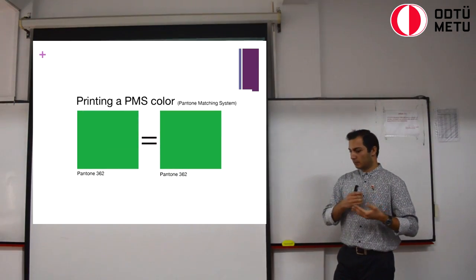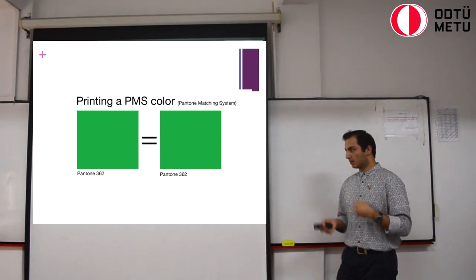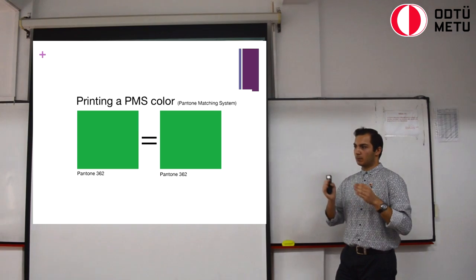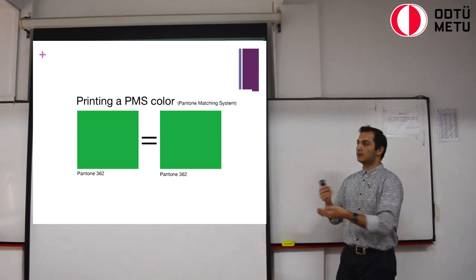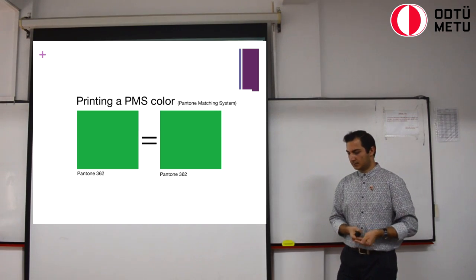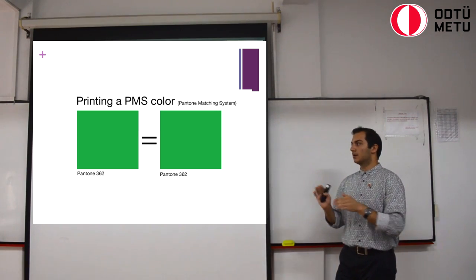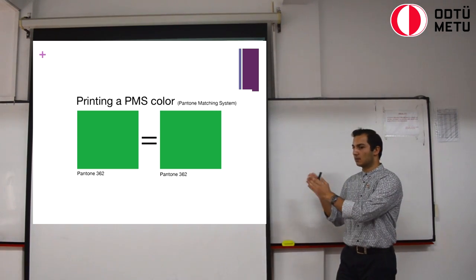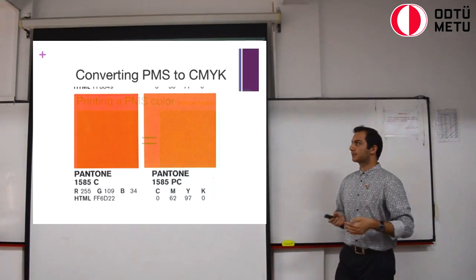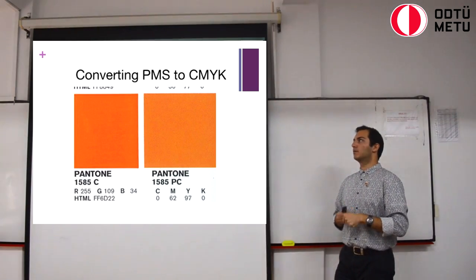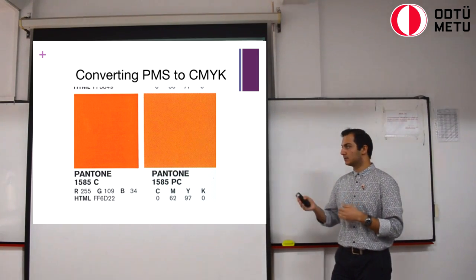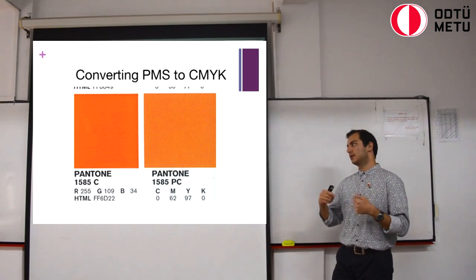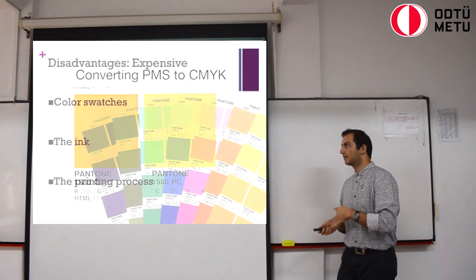However, when we are talking about the Pantone matching system, if you have a Pantone green, then it's a Pantone green — it cannot be dissected into other components. And this is basically what you get when you say Pantone 362. And even though converting PMS to CMYK is possible, as you can see, the color deteriorates along the process.